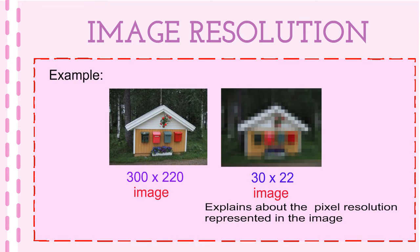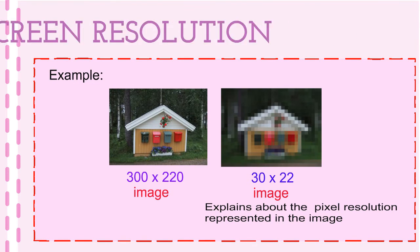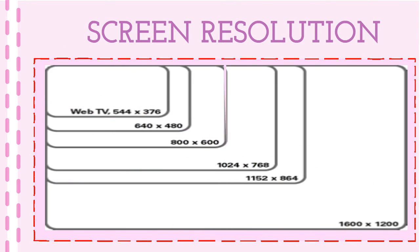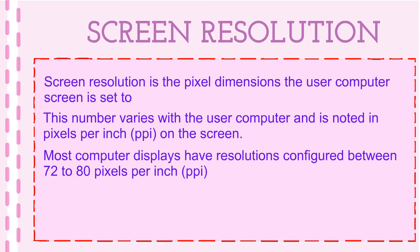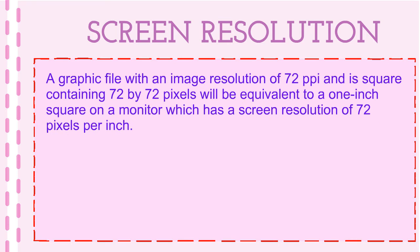Can you see the pixel resolution from the picture? Screen resolution is the pixel dimension, set as a number in pixels per inch. On the screen, as set by the user of the computer, the standard resolution is 72 to 80 pixels per inch.